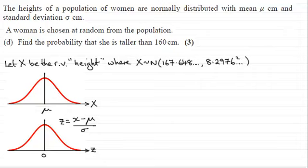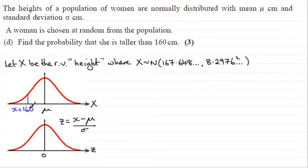Welcome back. First of all, I'd want to put on our distribution the observed value of 160 centimetres. The mean mu is 167 basically, so 160 is going to be on the left of it. So we place x = 160 centimetres there. We're looking for the probability that she's taller than this — that is represented by the area shading to the right of 160, which takes up more than half of our diagram, so we'd expect that probability to be more than 0.5.